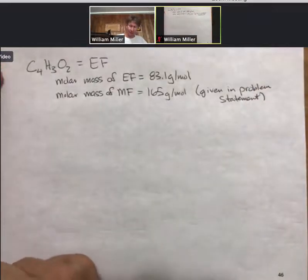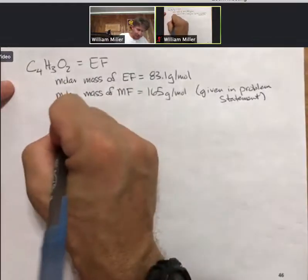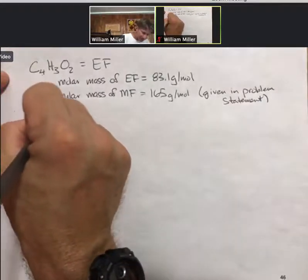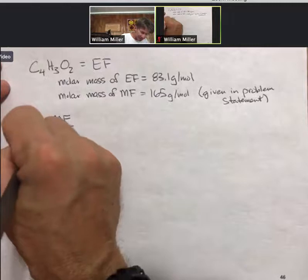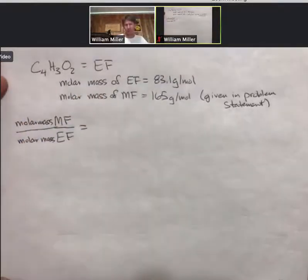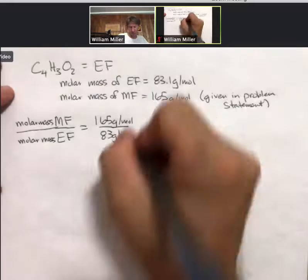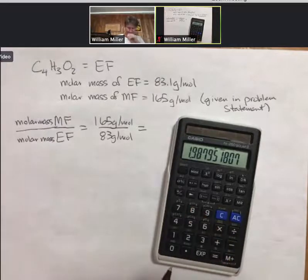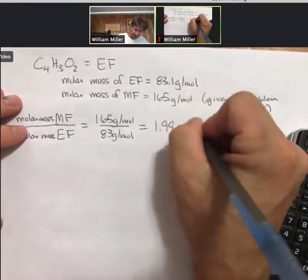Now, typically what I like to do is if you take the molar mass of the molecular formula divided by the molar mass of the empirical formula, you will get 165 grams per mole divided by 83 grams per mole. And the ratio is 1.99, which is 2.